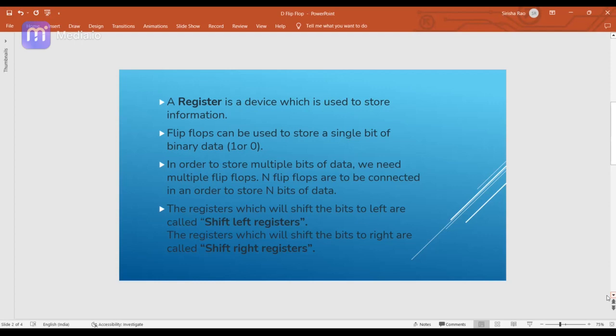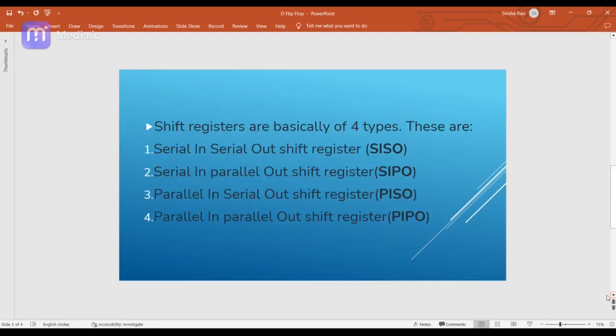The registers which shift bits to the left are called left shift registers, and the registers which shift data to the right are called right shift registers. Basically shift registers are of four types: serial-in serial-out, serial-in parallel-out, parallel-in serial-out, and parallel-in parallel-out. In this session we are going to see the first one — serial-in serial-out.